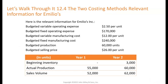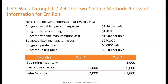Here's an example — this is Emilio. Budgeted variable operating expense is $250,000 per unit. Fixed operating expense is $170,000 — that means not manufacturing, just fixed operating. Budgeted variable manufacturing is $12,000 per unit. Budgeted fixed manufacturing is $240,000. Budgeted production is 60,000 units, and budgeted selling price is $26 per unit.